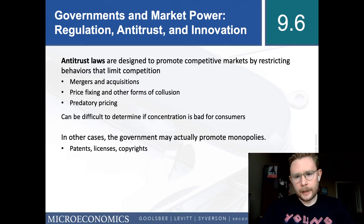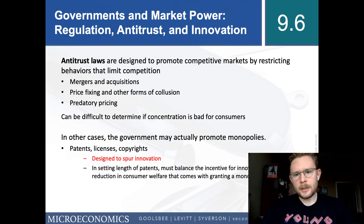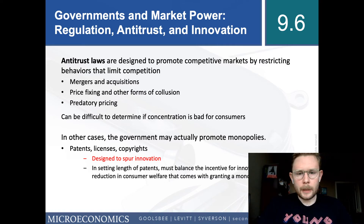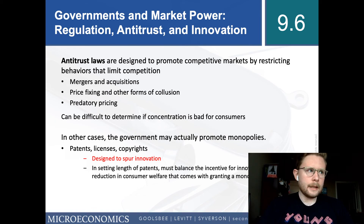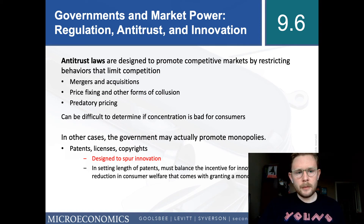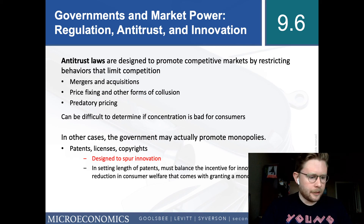Patents, licenses, and copyrights are designed to spur innovation, but the government has to be careful. In setting the length of patents, it must balance the incentive for innovation with the reduction in consumer welfare that comes with granting monopoly power. For example, when the government grants a patent to a drug manufacturer — say for insulin — it wants companies to invest in R&D for new drugs, but making the patent too long lets the drug company raise the price, which has bad effects for people who need the drug.